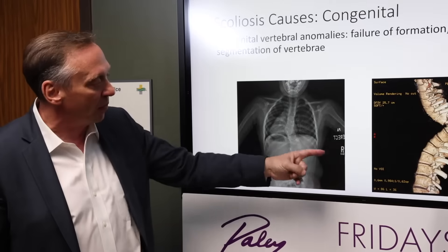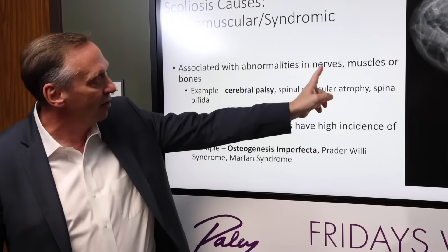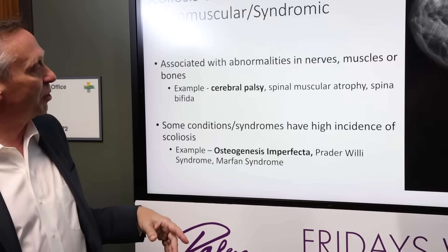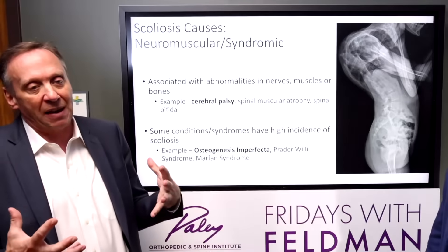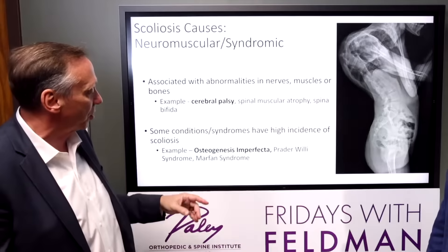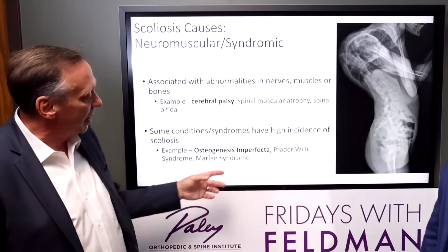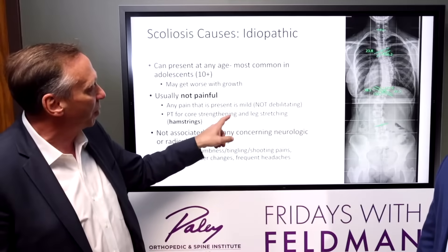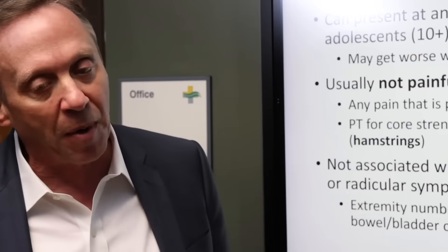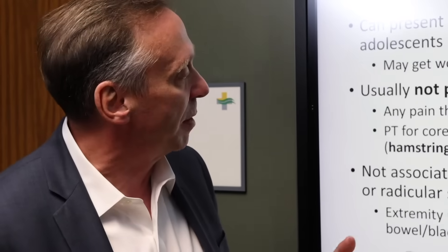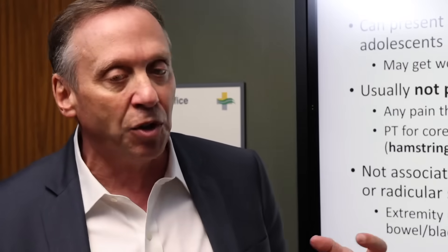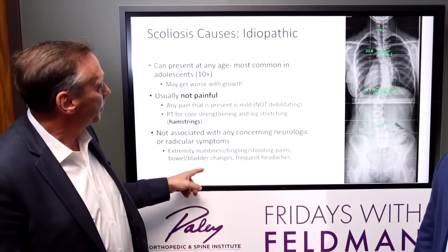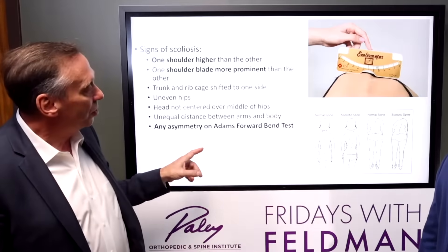Congenital means the building blocks are not okay. Neuromuscular causes include very spastic muscles. Prader-Willi, osteogenesis imperfecta, and Marfan syndrome are all types we see commonly in our practice. But the most common is idiopathic, where we don't know the cause. Now I'll talk about some of the newer things regarding evaluation and treatment of scoliosis.